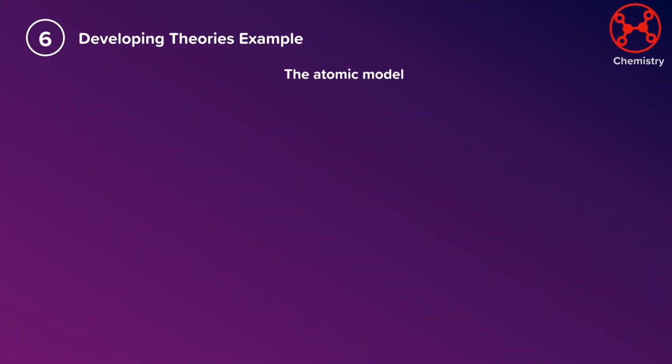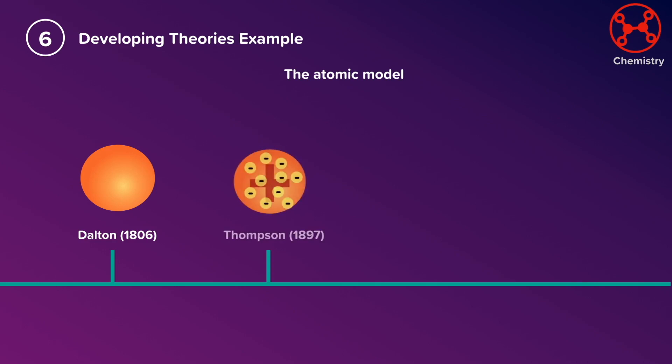An example of the development of a theory in chemistry is the development of our understanding of atomic structure through the atomic model. John Dalton, in the early 1800s, used experiments to develop his atomic theory, including some fundamental ideas that all matter is made of atoms, and that these atoms can rearrange in chemical reactions.